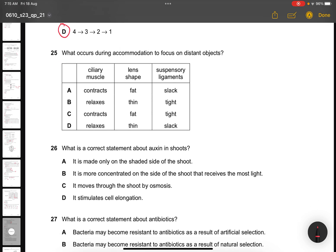Question 25. What occurs during accommodation to focus on a distant object? Distant object means far objects. The answer will be B. Because when you look at closer, the ciliary muscles will only contract. Since it's far, the ciliary muscles will relax, the lens will be thinner, and the suspensory ligaments will be tightened.